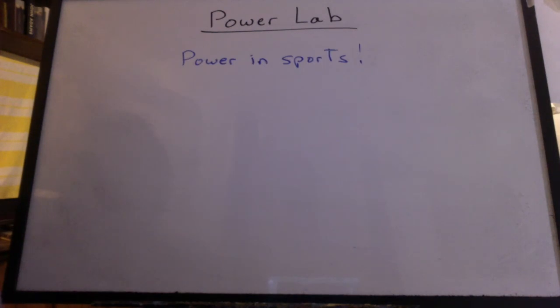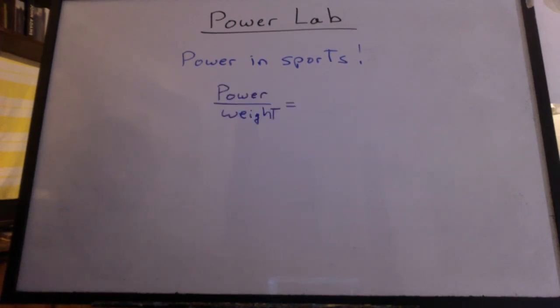Every year we do this lab in school, we put the data on the board and compare people's power output and their power to weight ratio. From a physics point of view, the power to weight ratio is just the power divided by the weight. You can see the weight cancels, and this is just the vertical velocity.